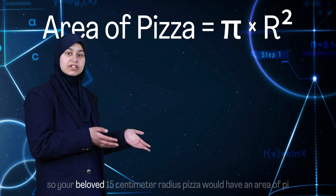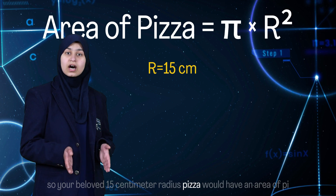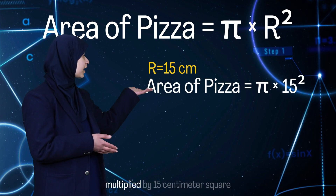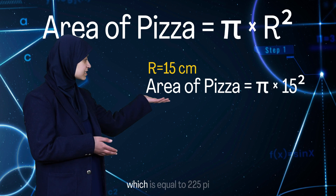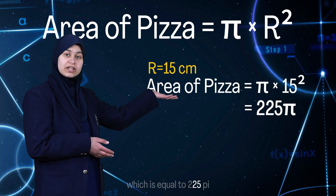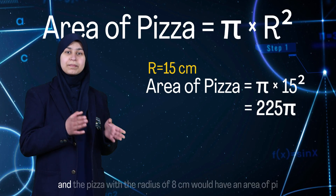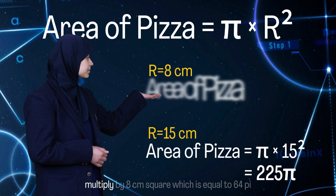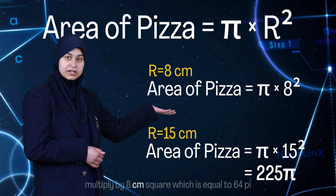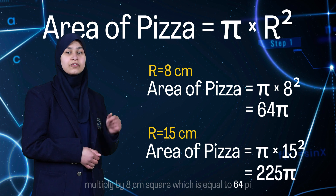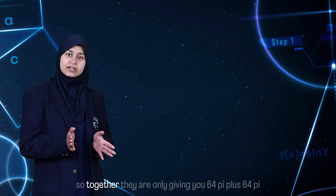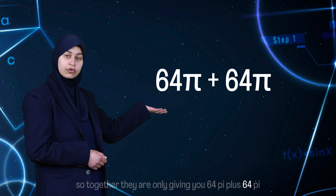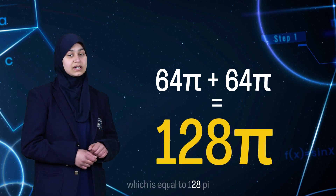So, your beloved 15 centimeter radius pizza would have an area of pi multiplied by 15 centimeters squared, which is equal to 225 pi. And the pizza with a radius of 8 centimeters would have an area of pi multiplied by 8 centimeters squared, which is equal to 64 pi. So together they are only giving you 64 pi plus 64 pi, which is equal to 128 pi.